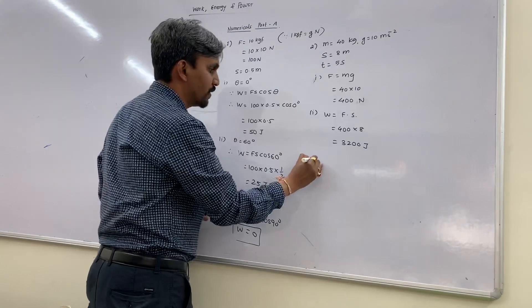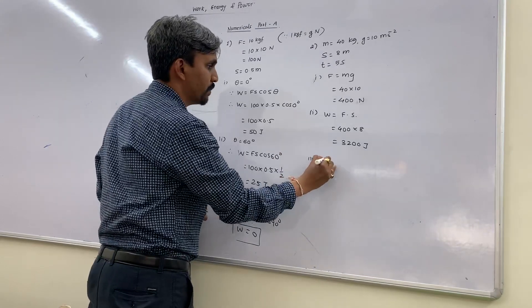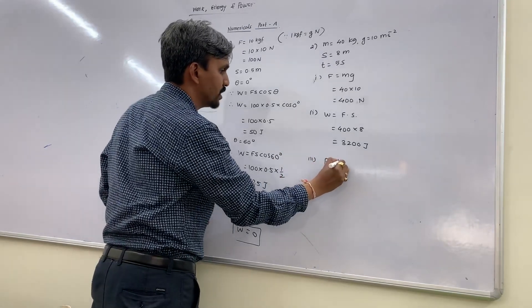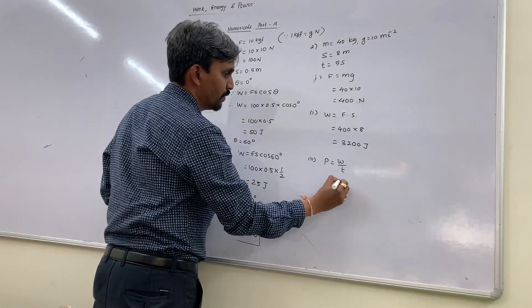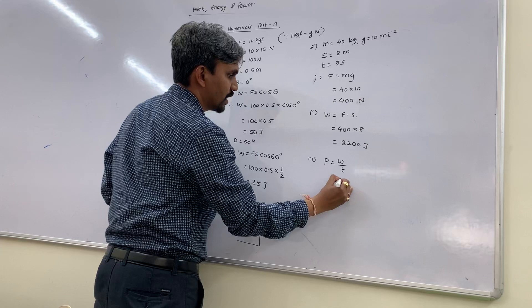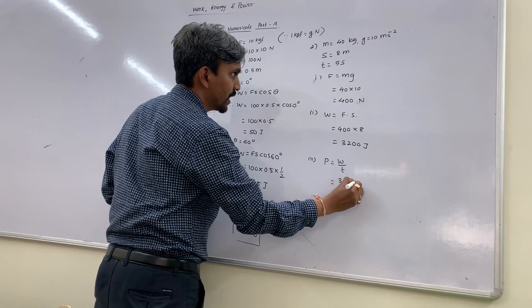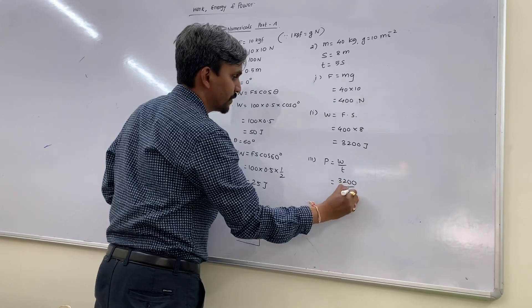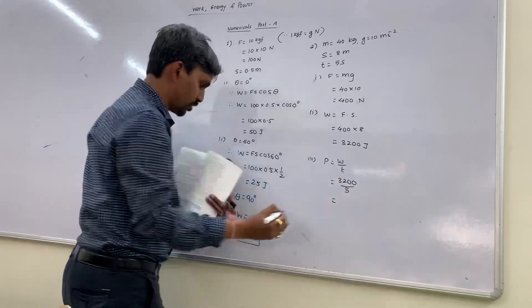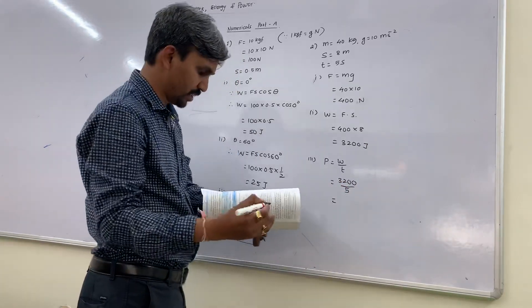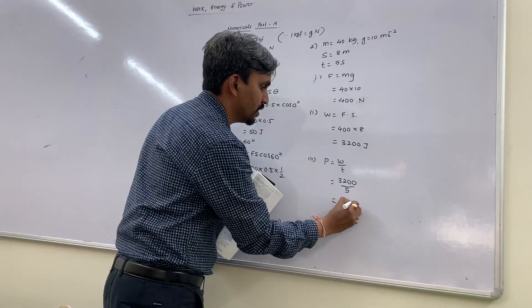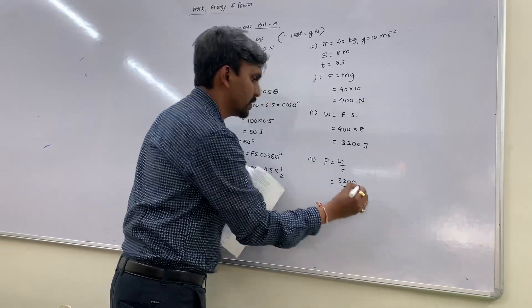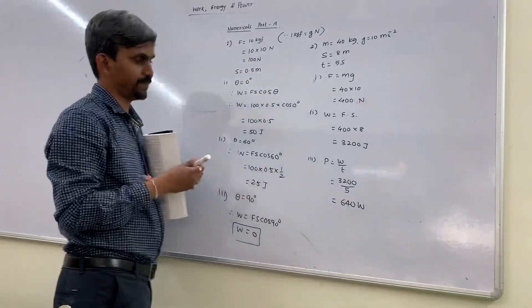Third part: they want power. Power = work / time = 3200 / 5 = 640 Watts.